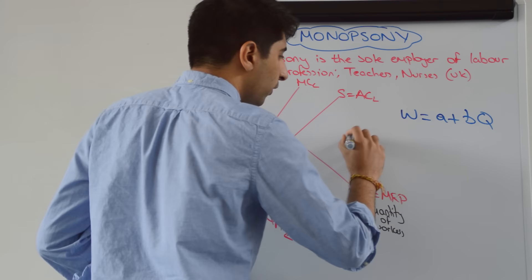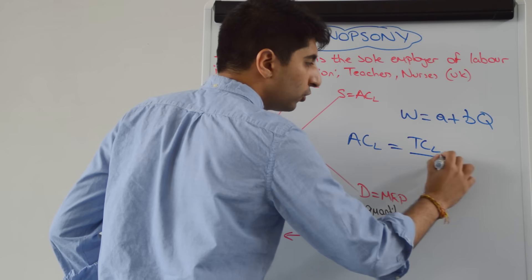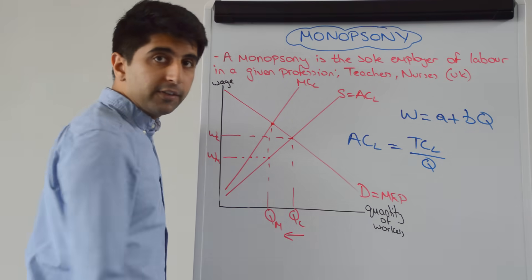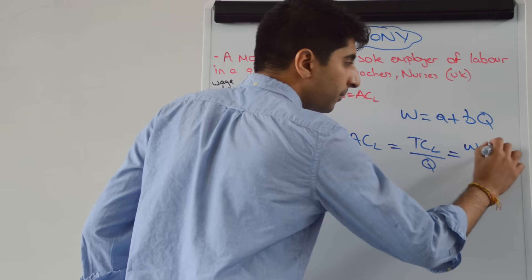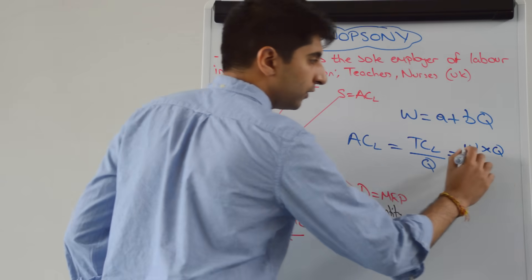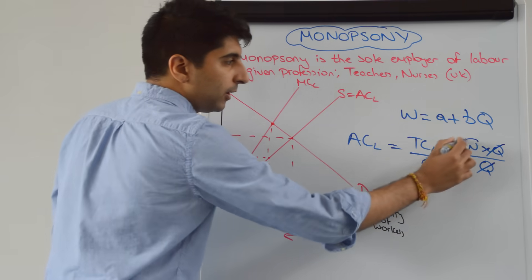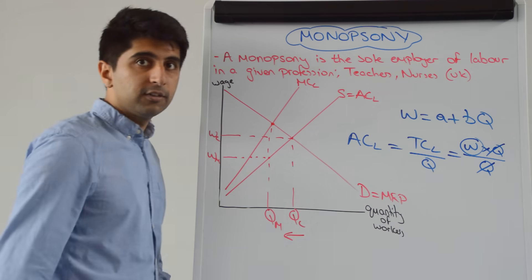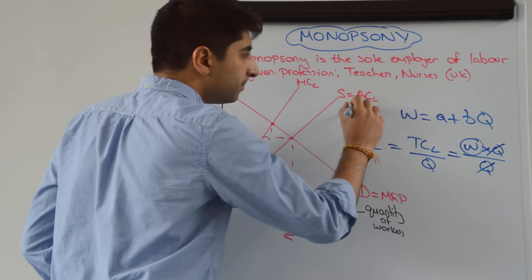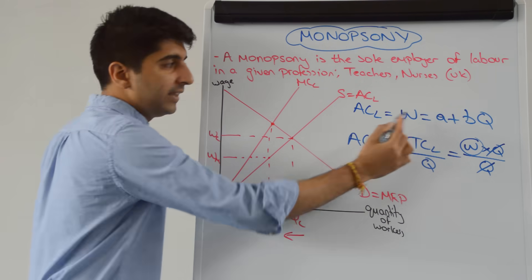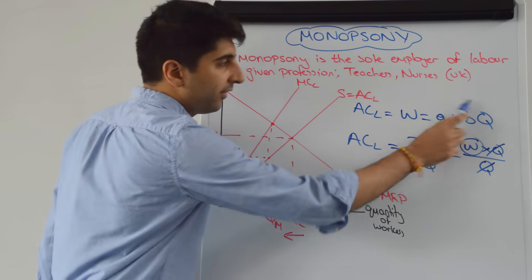We also need to understand what the average cost of labour is. The equation is simply the total cost of labour divided by the quantity of workers. Total cost of labour is the wage of each worker times the quantity of workers. Dividing by quantity, the Q's cancel out and we just get W. So average cost of labour equals the wage. Since our supply curve tells us W equals A plus BQ, it follows that the average cost of labour equals our supply curve.